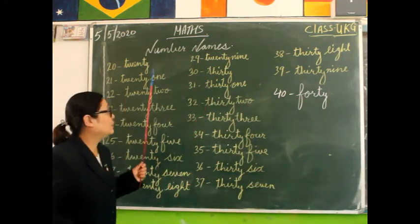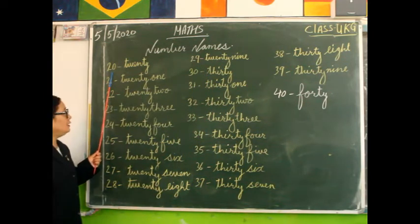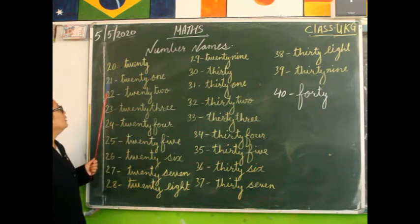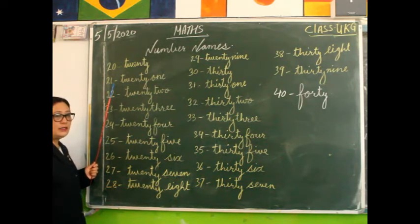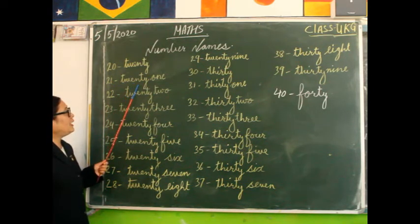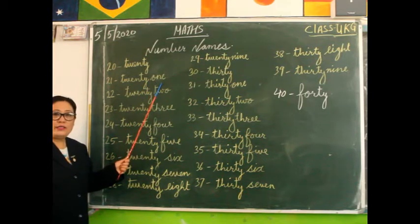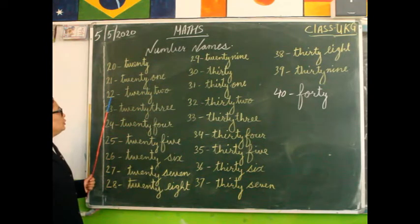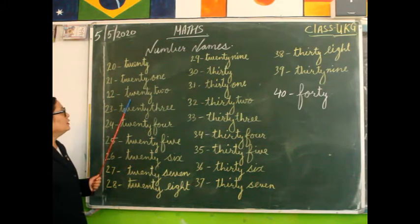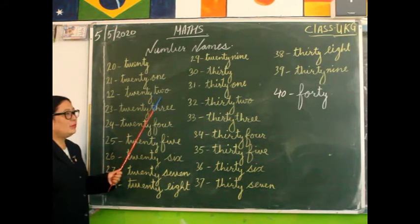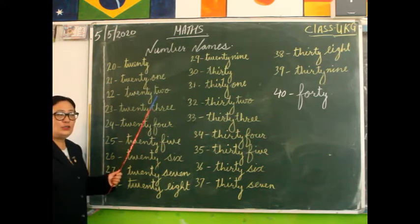So let's start write. I have to write 20. T-W-E-N-T-Y, 20. 21, T-W-E-N-T-Y, 20, O-N-E, 1, 21. 22, T-W-E-N-T-Y, 20, T-W-O, 2, 22.